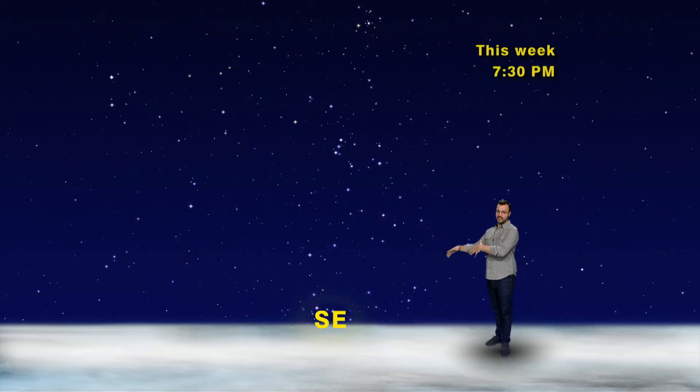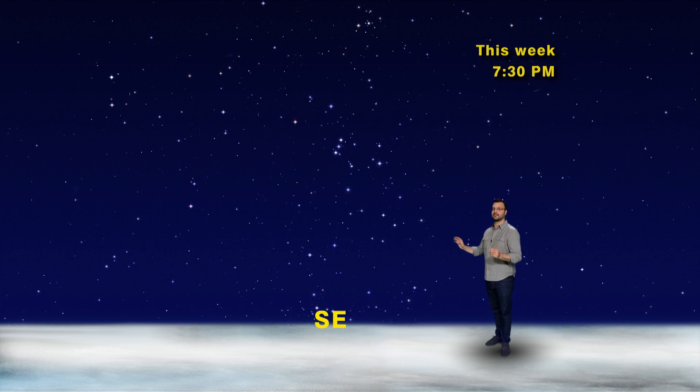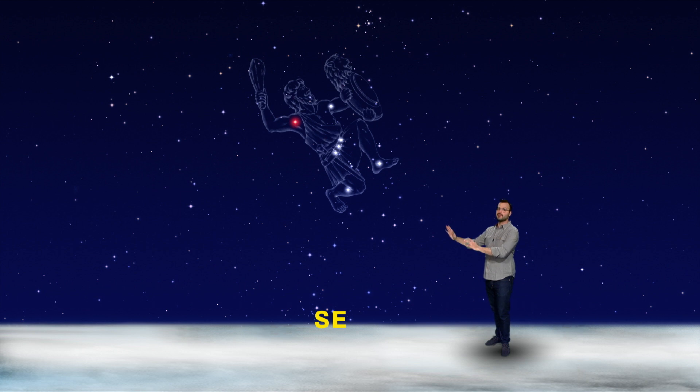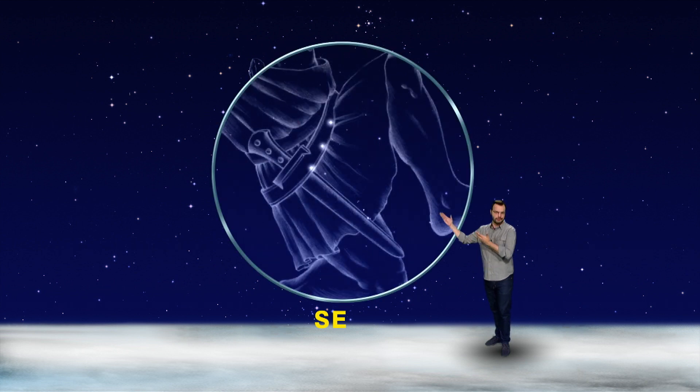So look southeast any night this week at around 7:30 PM and you're going to see a constellation which is loaded with bright stars, Orion the Hunter. The best way to find him is look for his belt of three stars in a row.